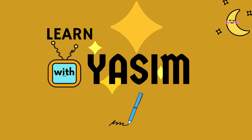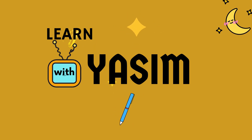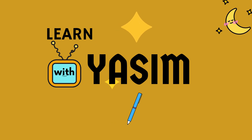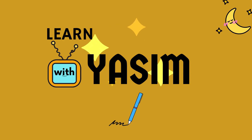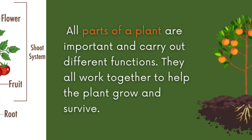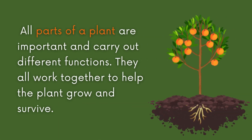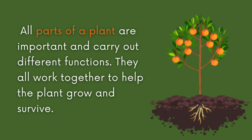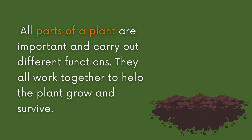Hello children! Welcome to Learn with Yasem. Today we learn about different parts of a plant. All parts of a plant are important and carry out different functions. They all work together to help the plant grow and survive.